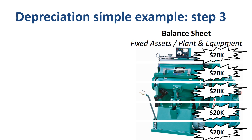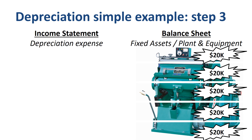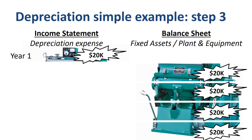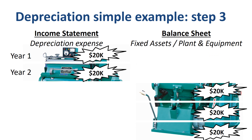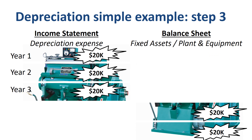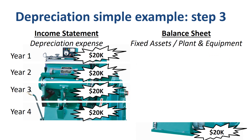Let's assume we bought the machine for $100,000 and plan to use it for 5 years. Over the useful economic life of the asset, these pieces are transferred from the balance sheet to an account in the income statement called depreciation expense — one piece of $20,000 in year 1, one piece in year 2, one piece in year 3, one piece in year 4, one piece in year 5.